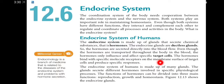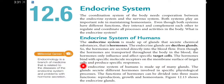The endocrine system of humans is made up of many glands, and each gland secretes different hormones involved in specific physiological processes. The functions of hormones can be divided into three main functions: reproduction, growth, and homeostasis.